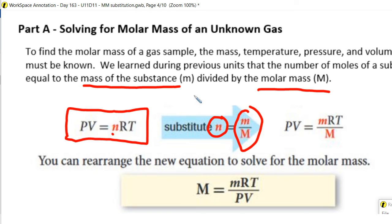we can pull n out and plug in mass over molar mass and replace them because they're equal to each other, right? N is equal to mass over molar mass. So take out this N and replace it with m over M. And that gives us a new equation here.